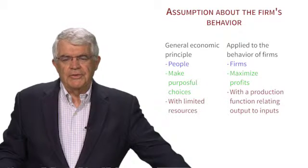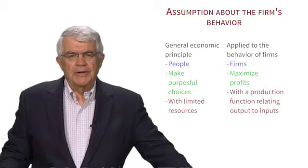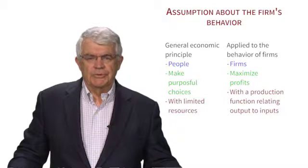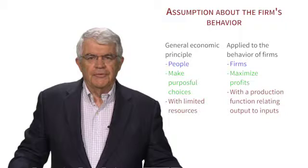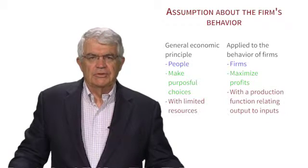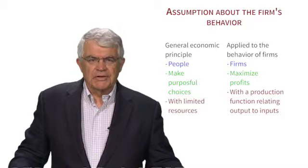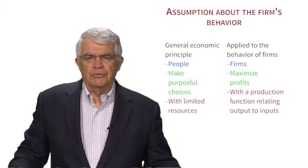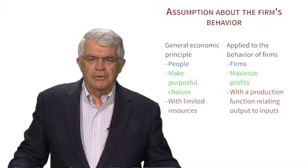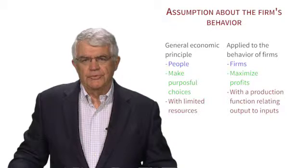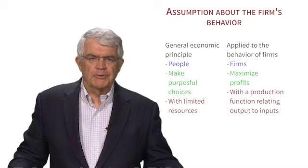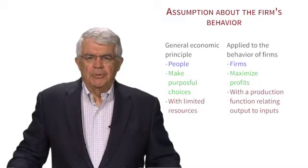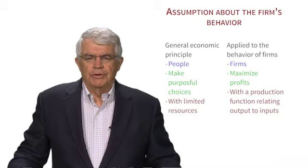When we think about the decision of the CEO, we're going to apply the basic mantra of economics — the general economic principle that people make purposeful choices with limited resources. In the case of the firm, the firm is going to try to maximize profits. It's going to be constrained by what we'll call a production function, which relates the amount of output to inputs — the amount of pumpkins to the input of workers.